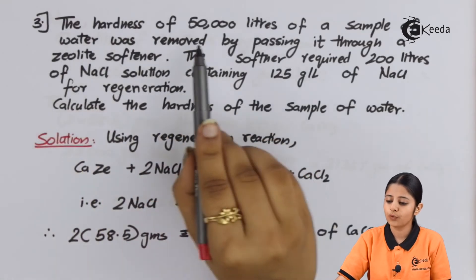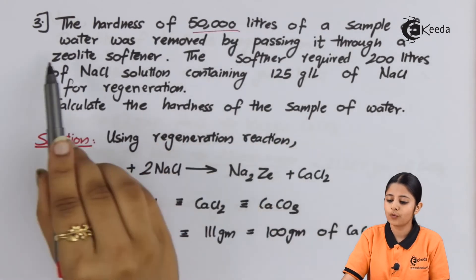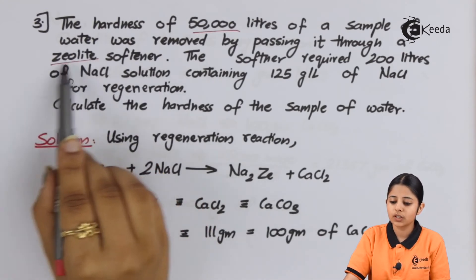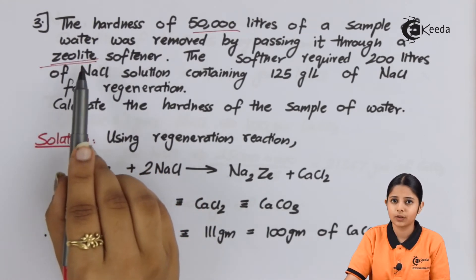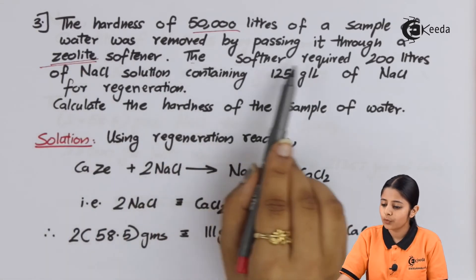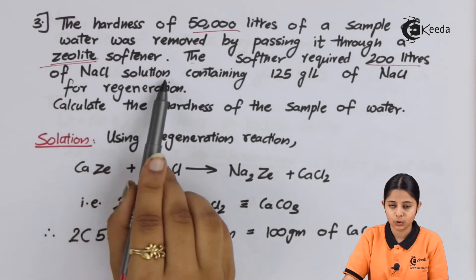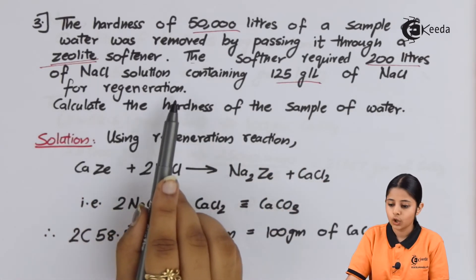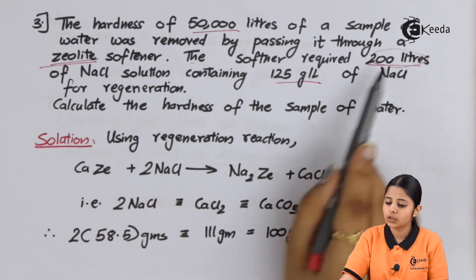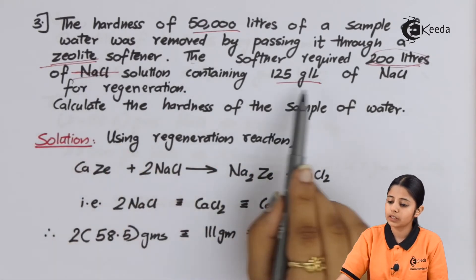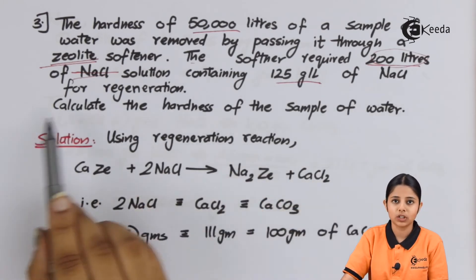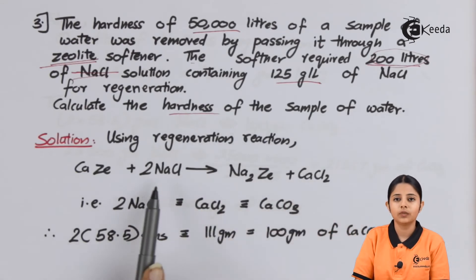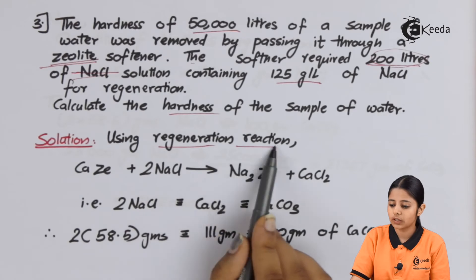Question 3: The hardness of 50,000 litres of a water sample was removed by passing it through a zeolite softener. Since the word zeolite is used, we apply zeolite reactions and formulas. The softener required 200 litres of NaCl solution containing 125 grams per litre of NaCl for regeneration. Calculate the hardness of the sample of water.